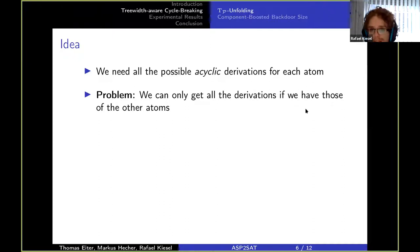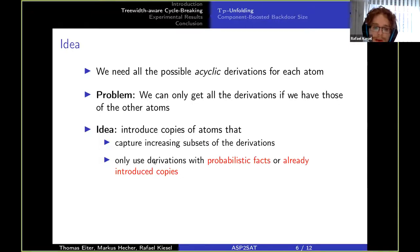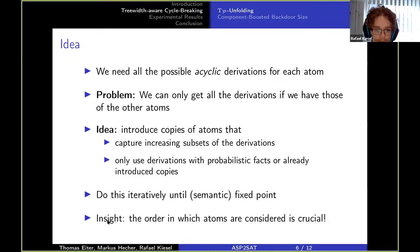Well the problem is we can only get all the derivations for some atom if we already have the derivations for all the other atoms. So this is again a cyclic problem. And instead what we say is we introduce copies of atoms, and these copies of atoms they don't capture all the derivations immediately but they capture increasing subsets of the derivations. And furthermore they only use derivations from probabilistic facts or already introduced copies of atoms.